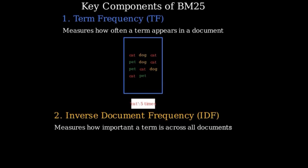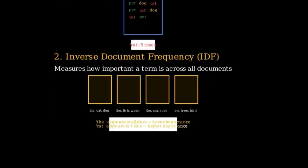Next is Inverse Document Frequency, or IDF. This measures how important a term is. Terms that appear in many documents are considered less important than terms that appear in fewer documents.